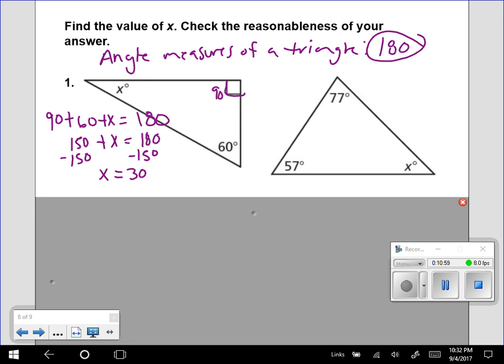So what I want you to do with this last one is set up an equation using 77, 57, and x. Set up an equation like I did right here. Here's your example. Do the same thing. And then solve for x.